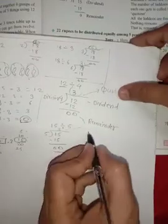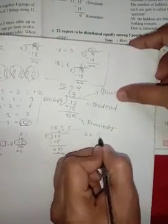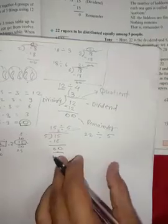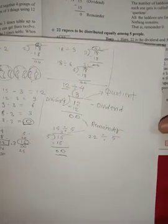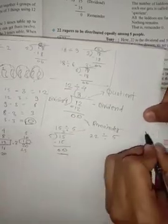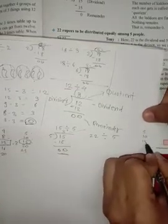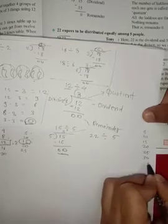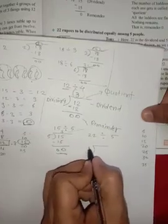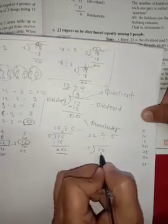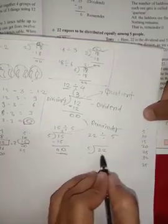Now the next problem: 22 divided by 5. That means 22 rupees to be distributed equally among five people. First let's write the table of five: five ones are five, five twos are ten, five threes are fifteen, five fours are twenty, five fives are twenty-five, and so on. Let's draw the division symbol: 22 divided by 5.